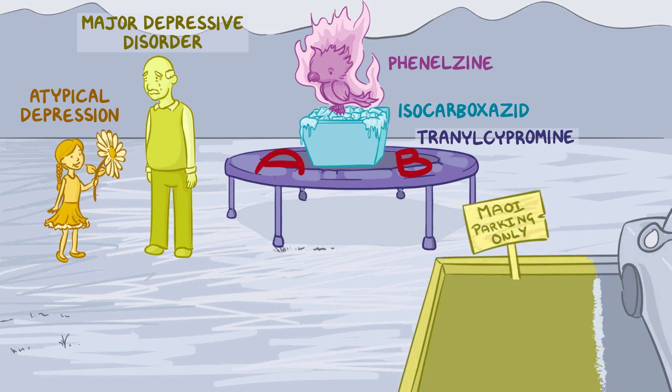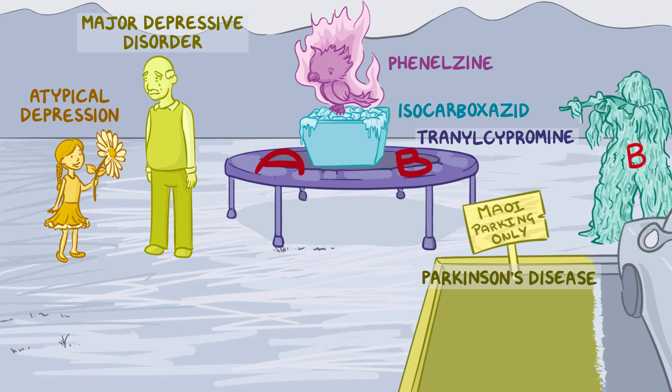Next, let's have an empty parking spot for the MAOIs that can be used to treat Parkinson's disease. A man wearing a ghillie suit is protecting this parking spot, which represents selegiline and rasagiline. Unfortunately, the ghillie suit doesn't help him hide, since there's a big red letter B on it. But it does help you remember these medications are selective for MAO-B.